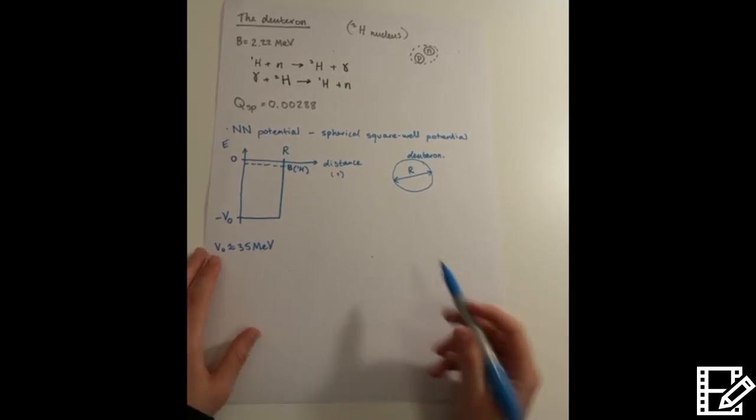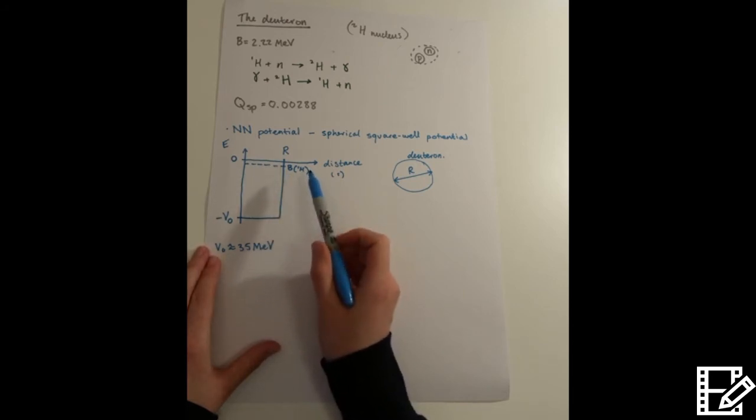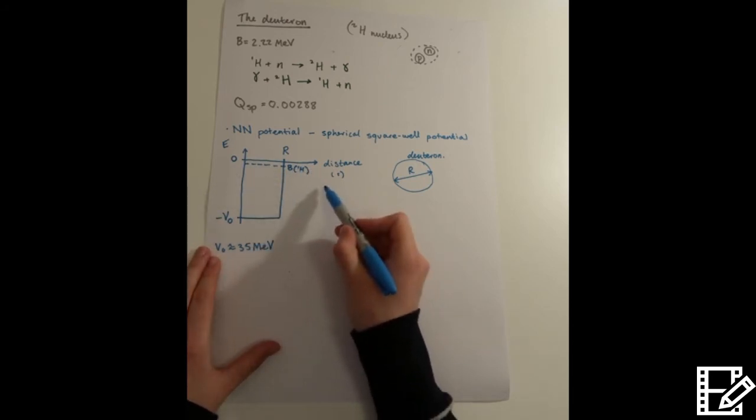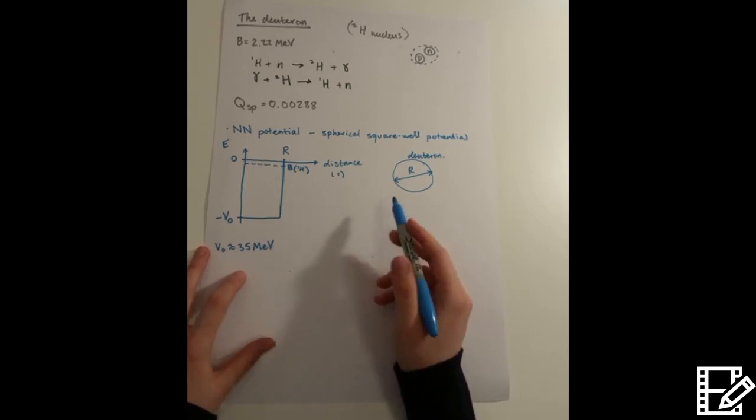It was very lucky for us that the binding energy is actually just, means that the system is just bound, because it turns out that the formation of deuterium, or the deuteron, is the first step in the proton-proton cycle.